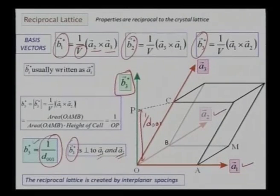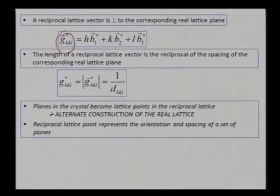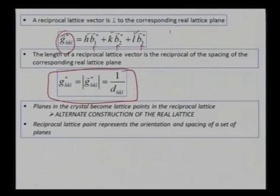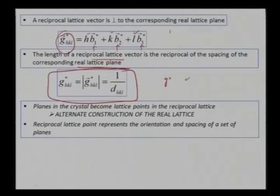That shows how the overall reciprocal lattice spacing is constructed. I can see my b₃ will remain perpendicular to both a₁ and a₂, and this particular distance is 1 over the interplanar spacing of a particular plane — approximately 0 0 1 here. The interplanar spacing is defined by the Miller indices plus the reciprocal lattice vectors. So I define 1/d_hkl by the reciprocal lattice vector corresponding to the real lattice plane.